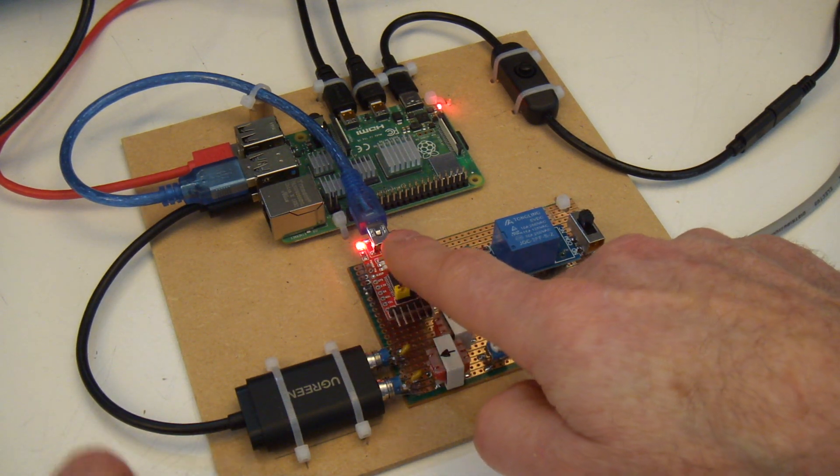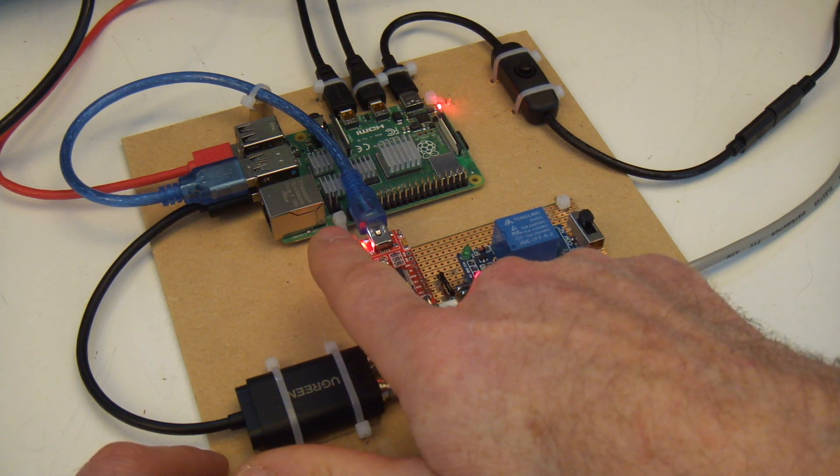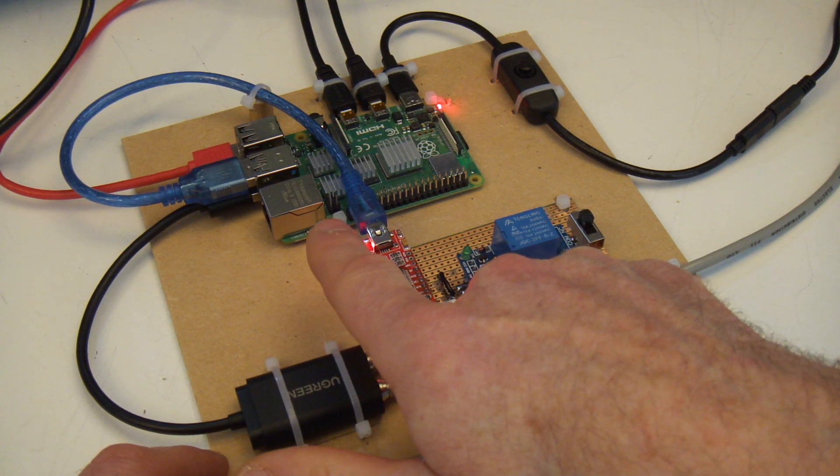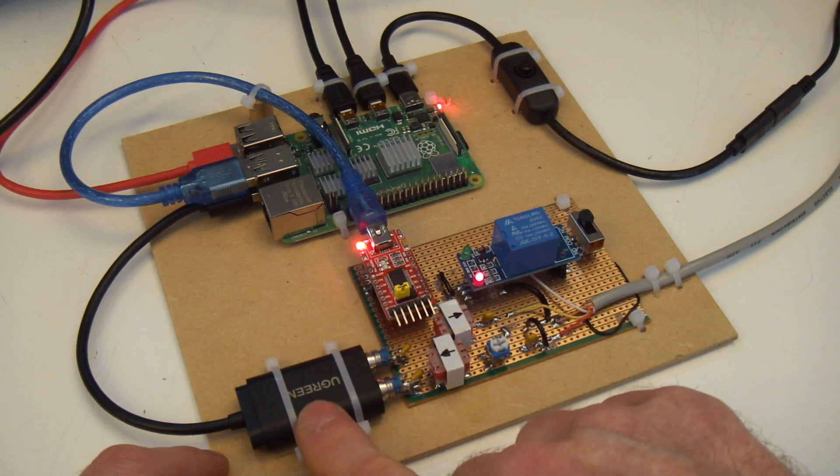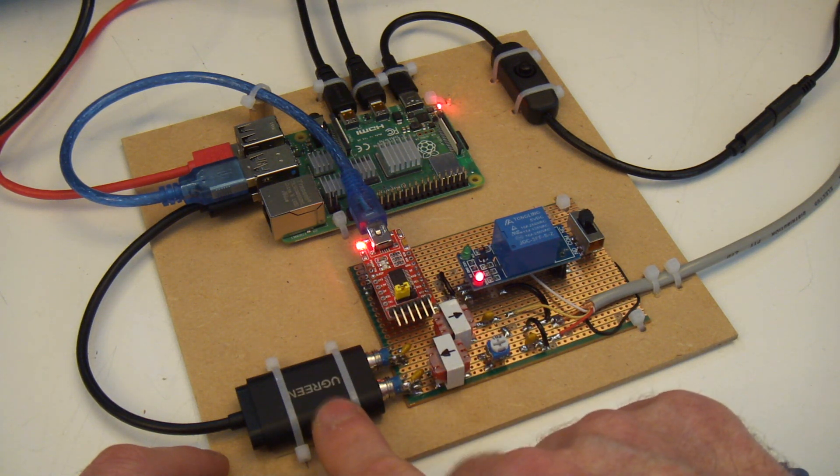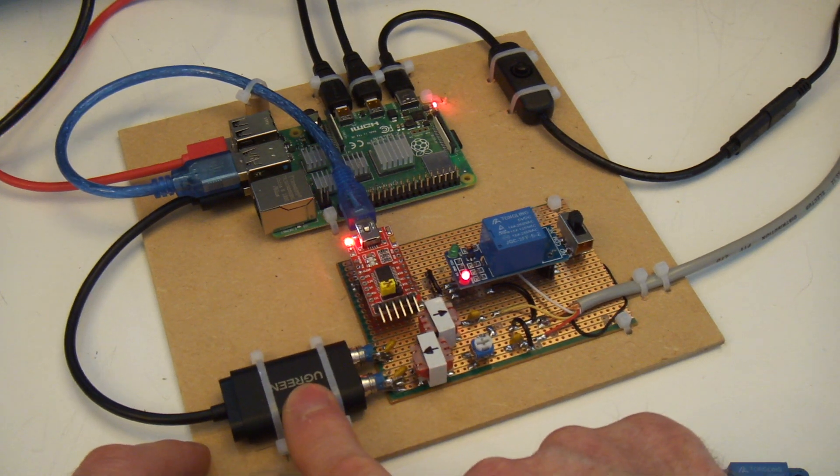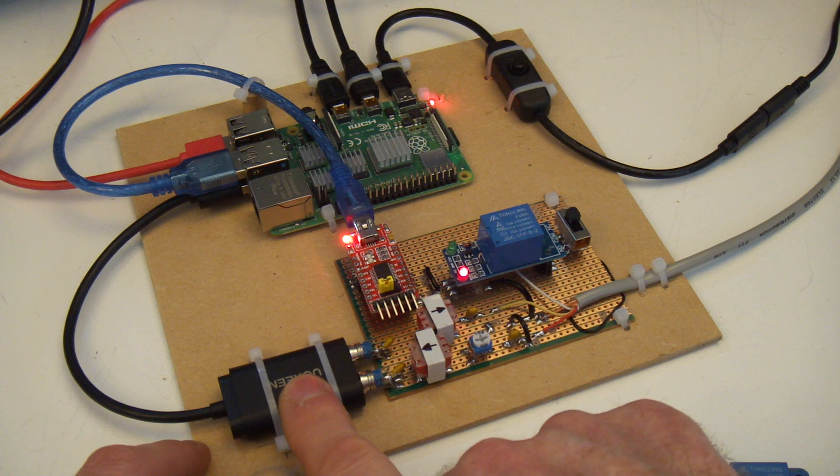In terms of the audio IO, I'm just using an external USB sound card which the Raspberry Pi just automatically out of the box detects and then offers that up to the various common software as an allowable IO source, which works really well.